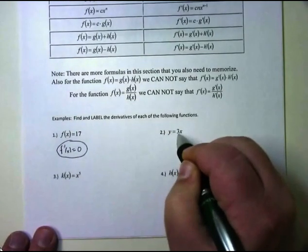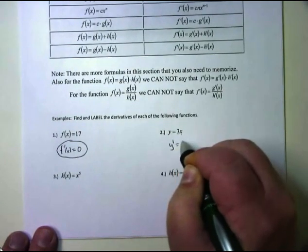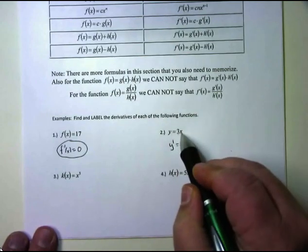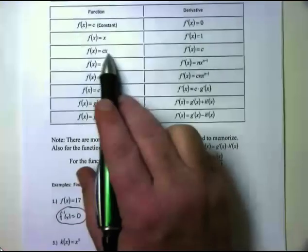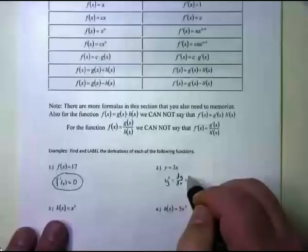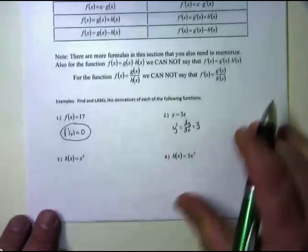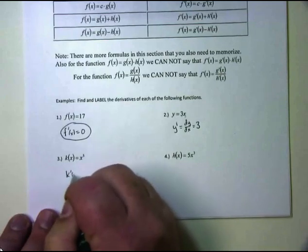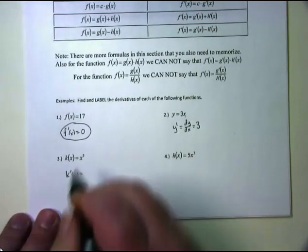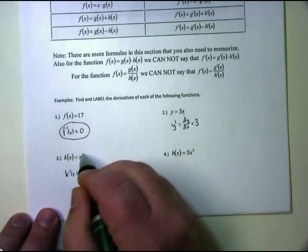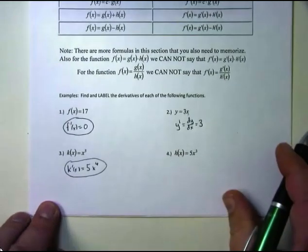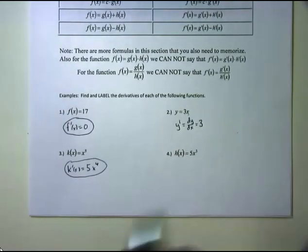If y equals 3x, then y′ — you can also use the Leibniz notation dy/dx — is equal to the derivative of 3 times x. Looking at our formulas, the derivative of a constant times x is just the constant, so the derivative is 3. If k(x) equals x to the fifth, then k′(x) equals 5x to the fourth — you bring down the power and subtract 1 from the exponent. That is key: noticing a pattern to get the derivative quickly without doing all that limit work.